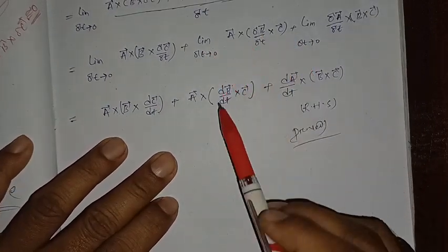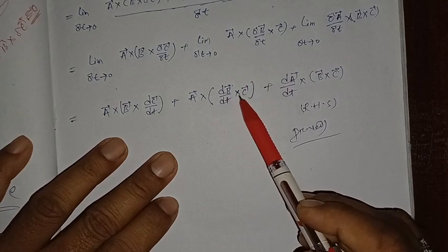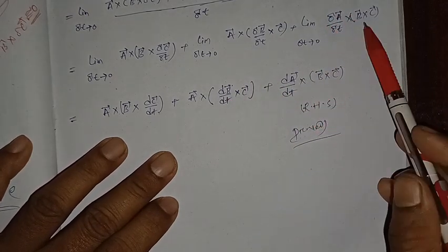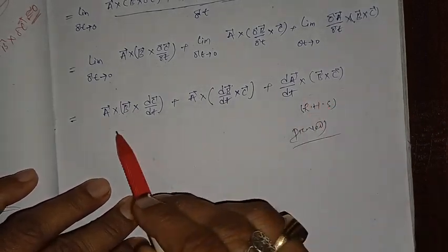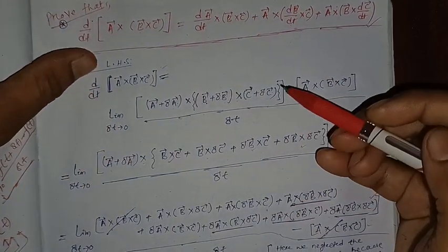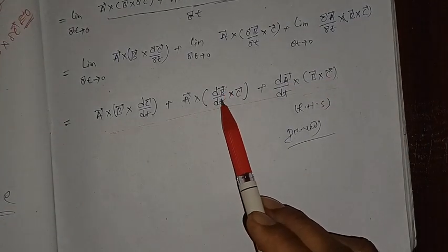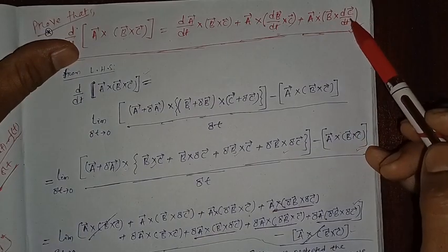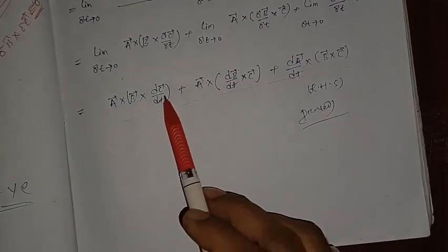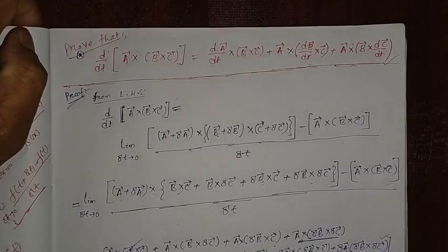Similarly, this term is written as a × (db/dt) × c, and this term is written as (da/dt) × b × c. Matching with the RHS of our question: da/dt × b × c, a × db/dt × c, and a × b × dc/dt — both sides match. Hence proved. Thank you so much for watching this video.